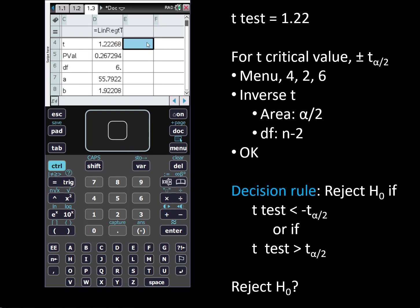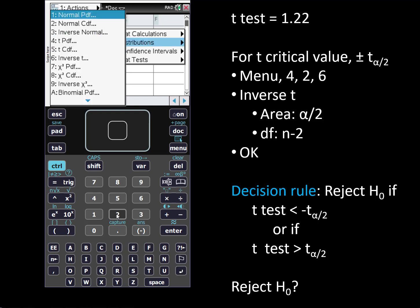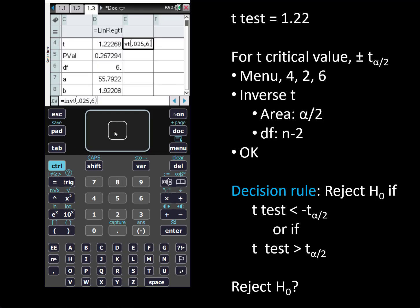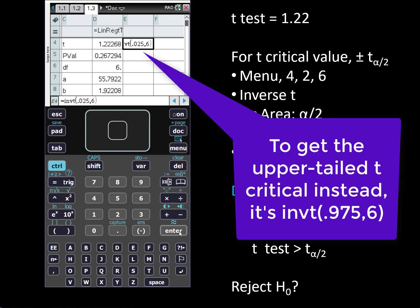I'm going to put that output right next to it in cell E4. I'll go to menu, 4 for statistics, 2 for distributions, and 6 for inverse t. Because this is a two-tailed test we're going to enter the area which is in one of the tails, alpha over 2. Tab down and the degrees of freedom is n minus 2. We had eight items in the sample therefore degrees of freedom is 6 and click OK. It's going to paste in the result for the inverse t that has 0.025 area to the left at 6 degrees of freedom.